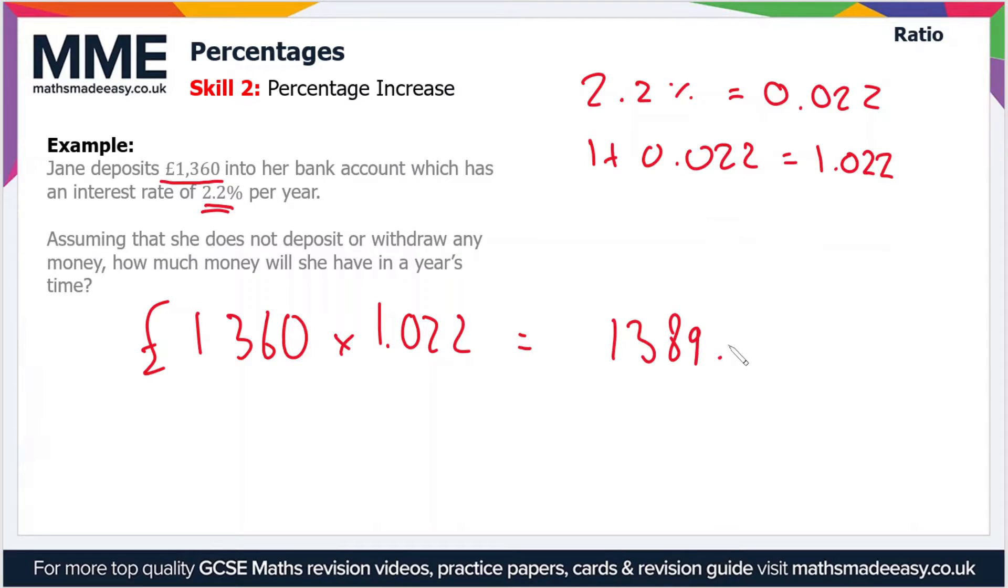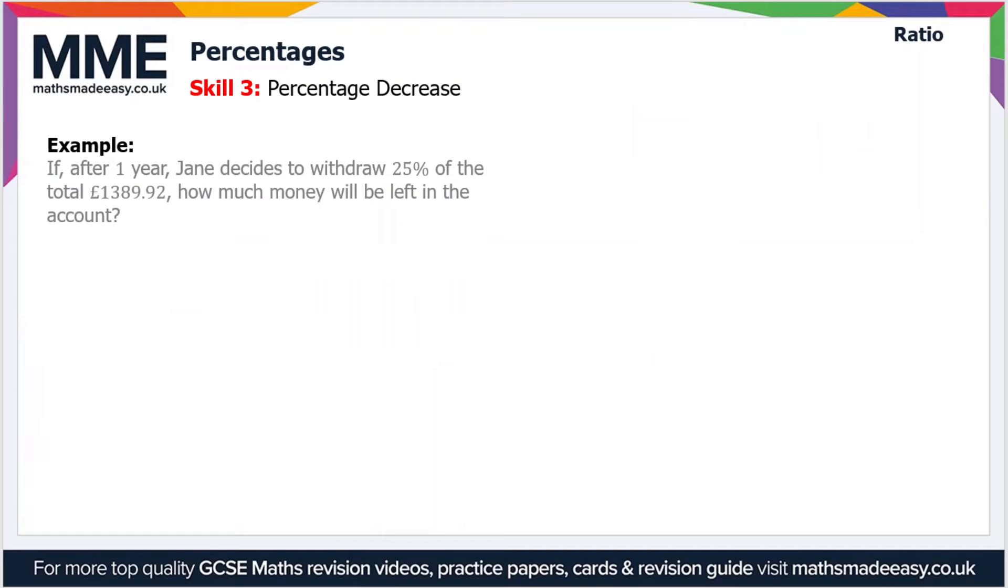Moving on then, what about percentage decrease? For example, if after one year Jane decides to withdraw 25% of the total £1,389.92, how much money will be left in the account?